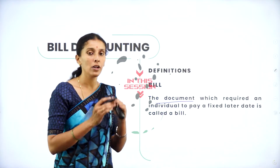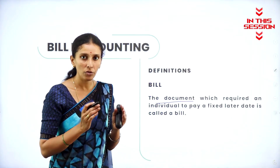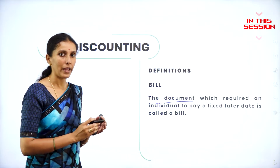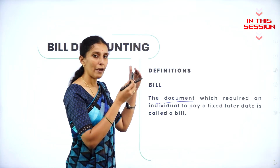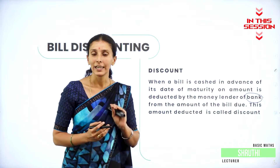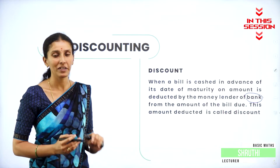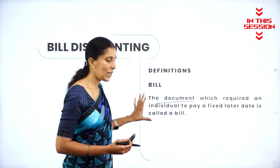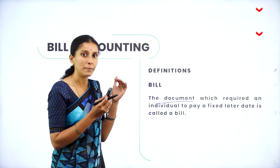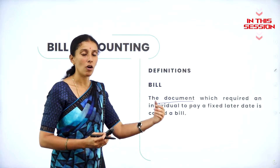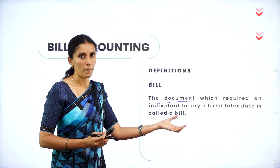The document of a bill is nothing but what amount of value you are going to pay, at what period of time you are going to pay, and when you are going to pay — everything will be listed in the bill. A bill is a document where you can purchase the goods and after some period of time you can give the amount.